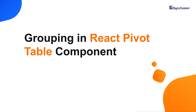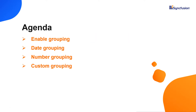Hi everyone, welcome back. In this video tutorial I will show you how to group row and column field items in the React PivotTable component of Syncfusion. I will also explore different types of grouping: number, date, custom, and depth.